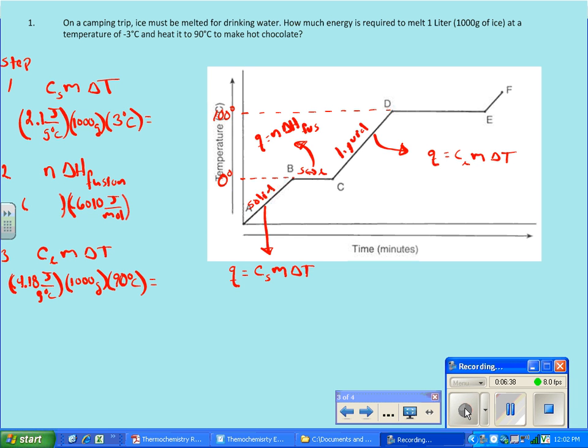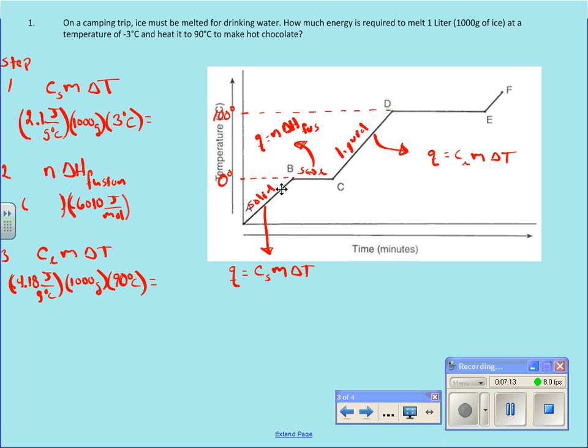And the last one, this is a change of phase, a heating curve type problem. On the camping trip, ice must be melted for drinking water. How much energy is required to melt one liter, that'd be 1,000 grams of ice at a temperature of negative 3 Celsius, and heat it to 90 degrees Celsius to make hot chocolate. So you always want to keep in mind what the graph looks like, because that literally tells you the steps you're going to need to make to change the phases and heat things or cool things. So let's think about where we're starting. We're starting with snow or ice at negative 3 degrees Celsius. That might be somewhere right about there, below zero.